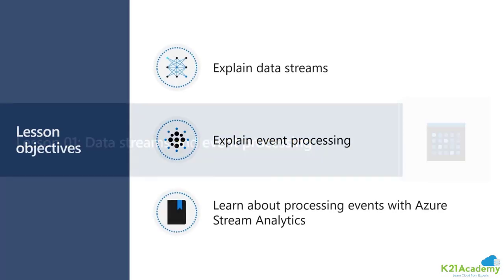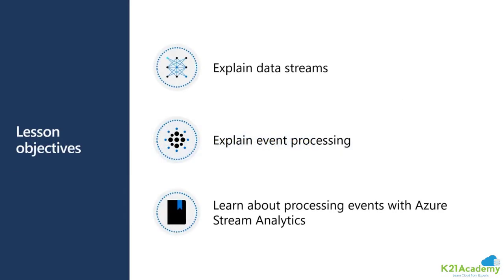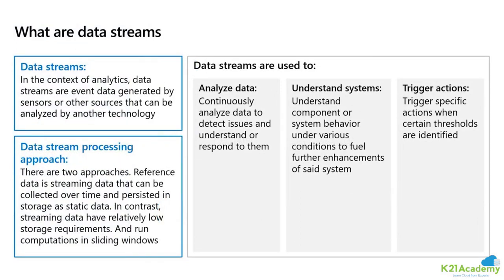As part of lesson number one, we'll first differentiate between data stream and event processing, and understand which technology does the processing for us. So what is a data stream? Imagine there is a car on the highway with sensors, and data is being streamed from that sensor into a cloud endpoint where you are processing the data — that is called a data stream. In the context of analytics, data streams are events generated by sensors or other sources that can be analyzed by another technology.